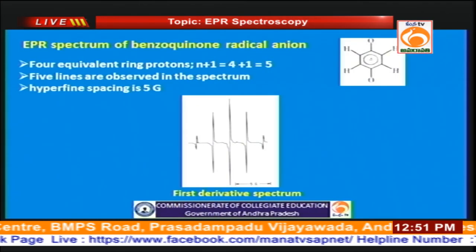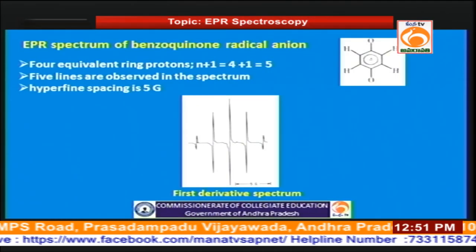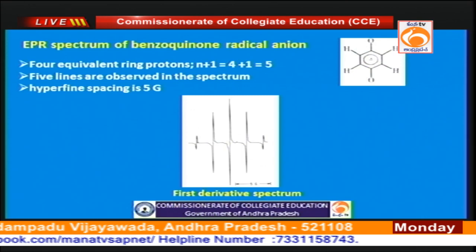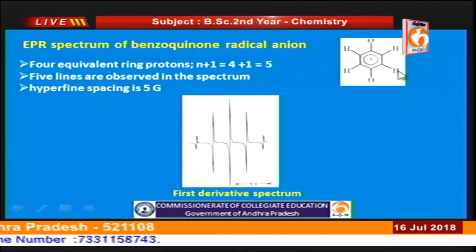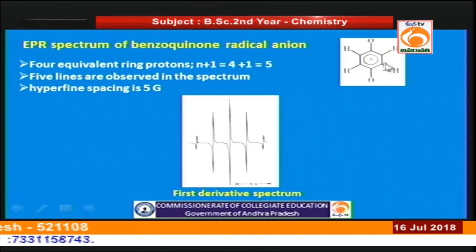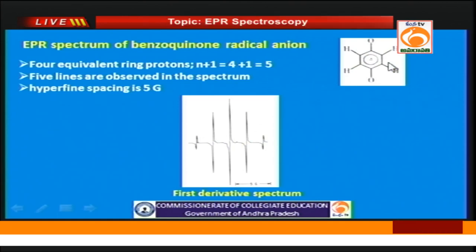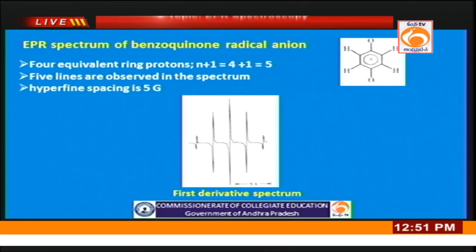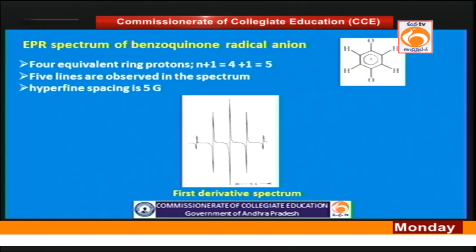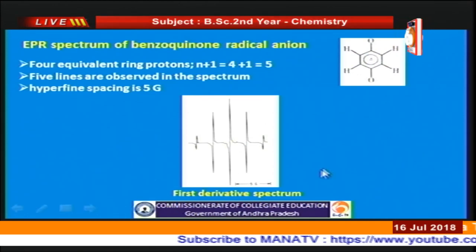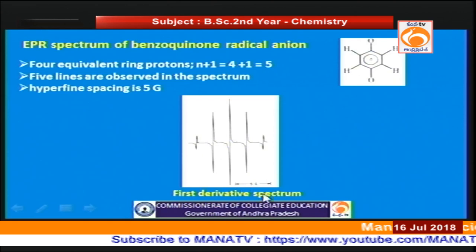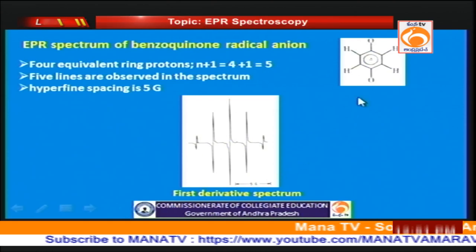This is the benzosemiquinone radical. In the case of the benzosemiquinone radical there are four ring protons which couple with the radical. Therefore N + 1 = 5, giving 5 lines, and the coupling constant value is 5 Gauss.